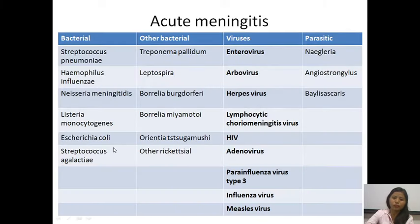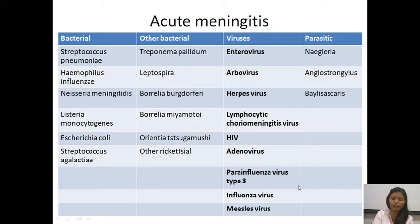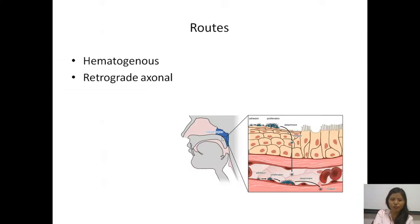This lists all the causes of acute meningitis — bacterial, atypical organisms, viruses, or parasitic. Among the viral causes, enteroviruses are the most common, followed by various arboviruses, herpes viruses, and LCMV. There could be aseptic meningitis-like features during HIV, adenoviruses, parainfluenza viruses, and rarer causes including influenza and measles viruses.